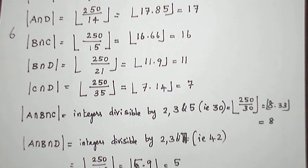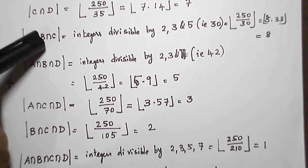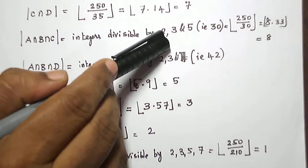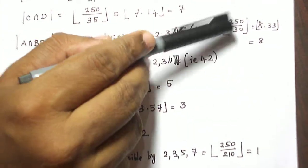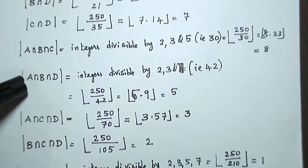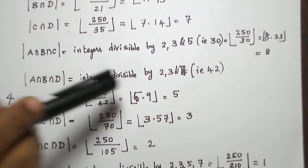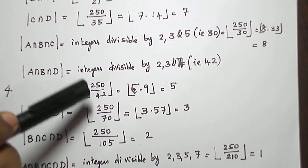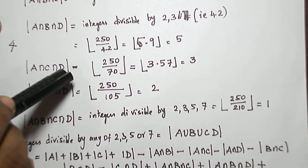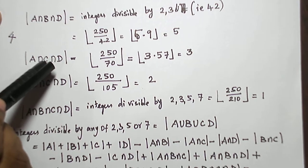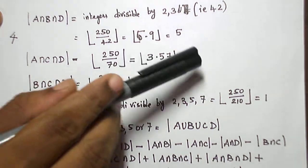Now for the three-element intersections — there are 4 such combinations. A∩B∩C: divisible by 2, 3, and 5, that is 30, so floor(250/30) = 8. A∩B∩D: divisible by 2, 3, and 7, that is 42, so floor(250/42) = floor(5.9) = 5. A∩C∩D: divisible by 2, 5, and 7, that is 70, so floor(250/70) = floor(3.57) = 3.